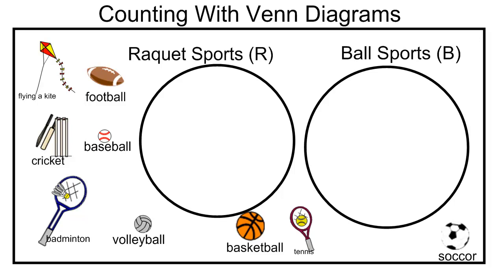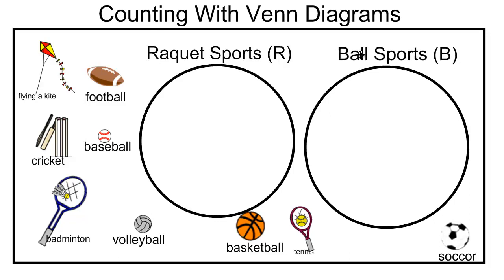We're counting with Venn diagrams, and here we are — we're going to camp again, and there are all these fantastic activities that we can do. We want to know about what racket sports are available and what ball sports are available. So what sports involve rackets and what sports involve balls?